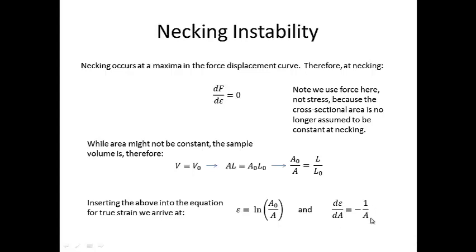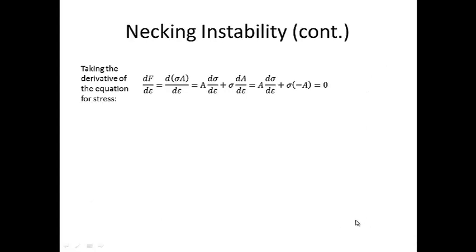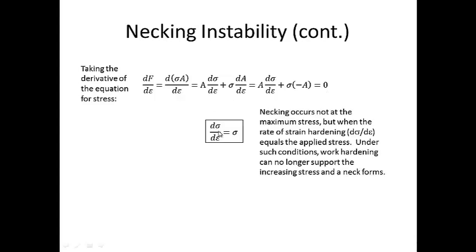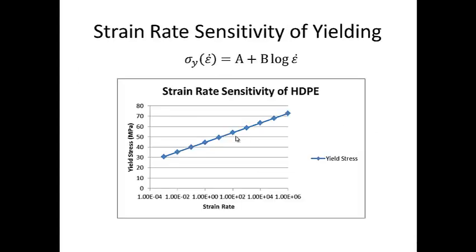So if I take dEpsilon dA, that's equal to minus 1 over A, so here I'm replacing dA dEpsilon with minus A. And that's all equal to 0. So I can now solve this equation for d(sigma) dEpsilon is equal to sigma. What this means is that necking occurs when the work hardening or strain hardening rate of the material, the change in stress with respect to the change in strain, is equal to the applied stress. That's when necking occurs. This is true both in metals and polymers.